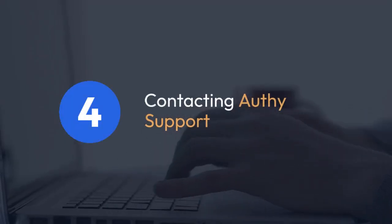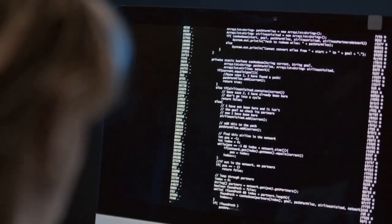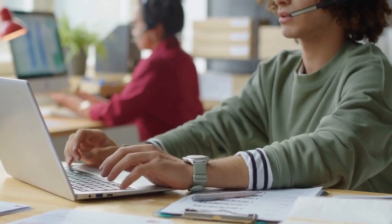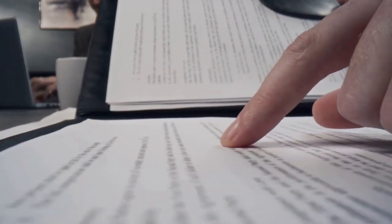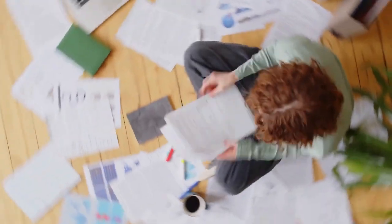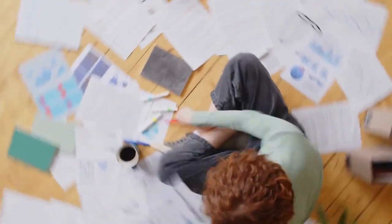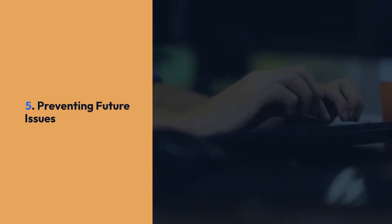Contacting Authy Support: If neither recovery codes nor email or SMS recovery work, your last resort is contacting Authy support directly. They will be able to guide you through account recovery processes, which might involve proving your identity and verifying ownership of the account. Expect this process to take some time and involve specific security questions or confirmations. Be prepared to provide as much information as possible, and be patient and follow their instructions carefully.